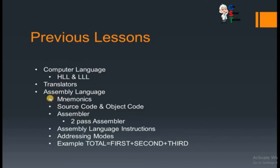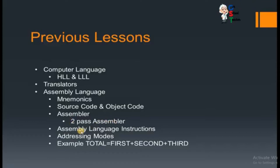We saw different types of translators, then we came to our topic which was assembly language. In assembly language, up till now we have seen what is mnemonic, source code and object code. We have also seen the assembler, specifically the two-pass assembler as given in your book, then a number of different types of instructions.